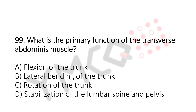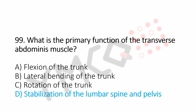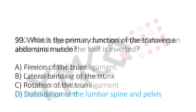What is the primary function of the transverse abdominus muscle? Option A: flexion of the trunk. Option B: lateral bending of the trunk. Option C: rotation of the trunk. Option D: stabilization of the lumbar spine and pelvis. And the answer is option D, stabilization of the lumbar spine and pelvis. Now let us move to question number 100.